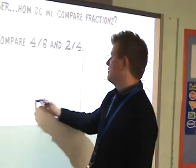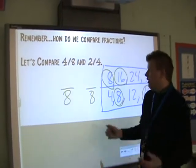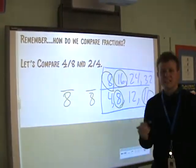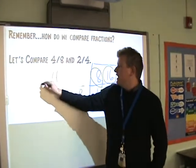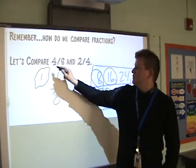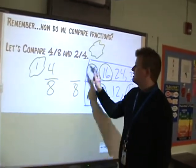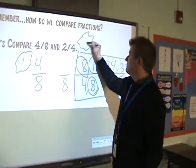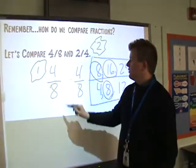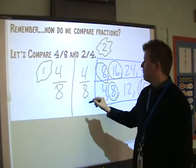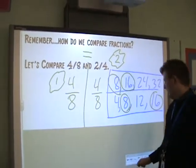So we want our denominator in both cases to end up as 8, so we can really compare which one's greater, which one's less than, or if they're equal. For 4/8 — it already has a denominator of 8, so the magic number is 1: 8 times 1 is 8, 4 times 1 is 4. For 2/4, the denominator times what equals 8? 4 times 2 equals 8, and 2 times 2 is 4. So 4/8 equals 4/8 — they are equivalent.